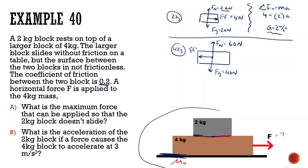What this tells us is that if the whole system accelerates more than 2 meters per second squared, this top block is going to start to slide off, because there's not enough friction to drag it along. So if it accelerates more than 2 meters per second squared, there's not enough friction to hold it and it'll start to slide off.